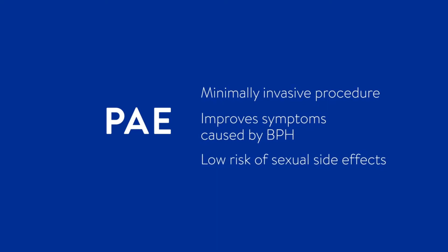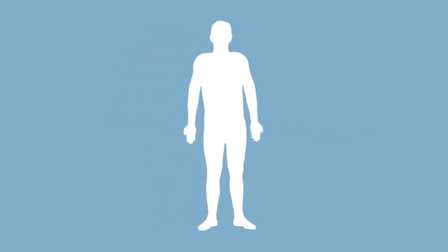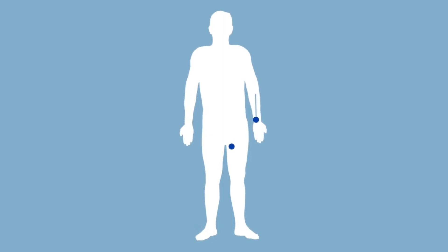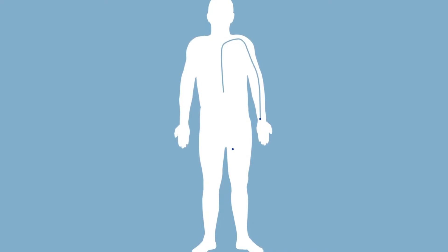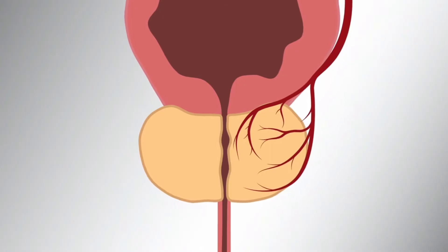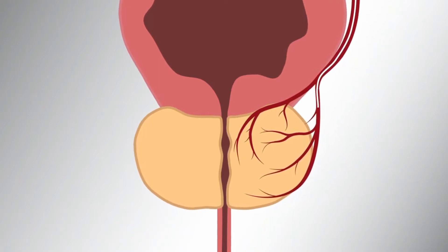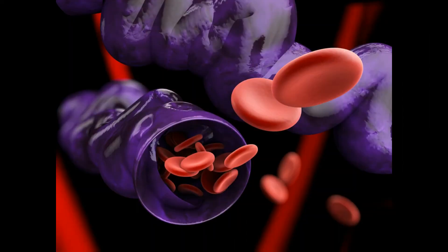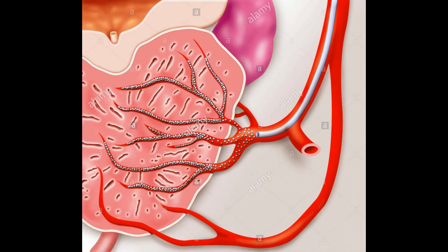PAE is a minimally invasive procedure that improves the symptoms of BPH without side effects and is very efficient at stopping bleeding. How do we do it? We enter from the wrist of the patient under local anesthesia and introduce small tiny catheters that we navigate inside the blood vessels in a very selective fashion all the way down to the prostate. Once we are inside the blood vessel of the prostate, we stop the blood flow to the prostate.